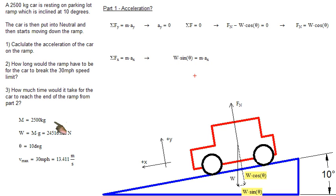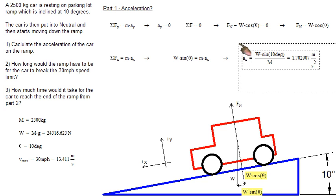So we know weight from earlier, we know theta, it's given in the problem, and we know mass, it's given in the problem. The only unknown in this equation is Ax. So when we rewrite it to solve for Ax, we see Ax equals weight times sine of ten degrees divided by mass. And when you plug and chug your known values, you get 1.7 meters per second squared. And that's part one. That's the acceleration of the car.